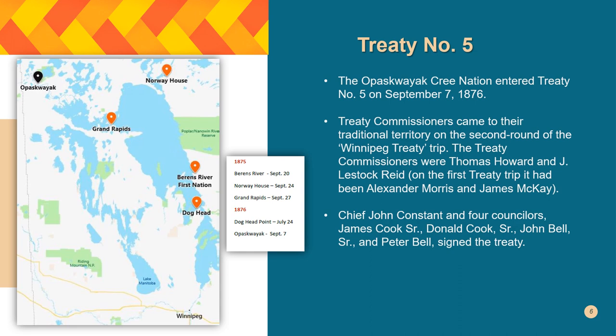Treaty Number Five was a unique treaty in many ways compared to, say, Treaty Number One, which took place at one spot — Lower Fort Garry — over about four days, with various ceremonies and treaty commissioners representing the federal government. Treaty Number Five, by contrast, happened over two years at a variety of communities. You can see it on the map.